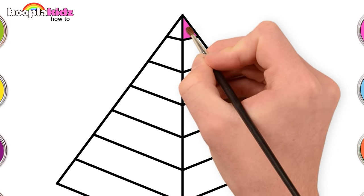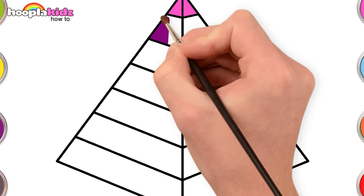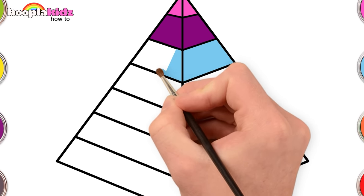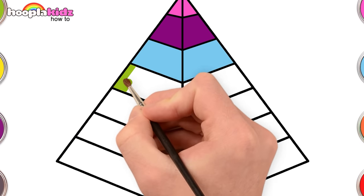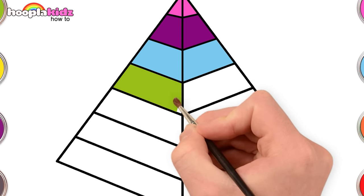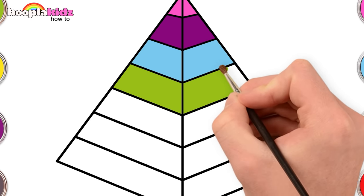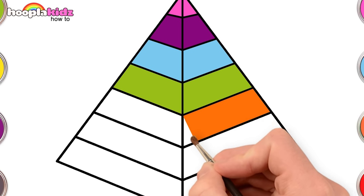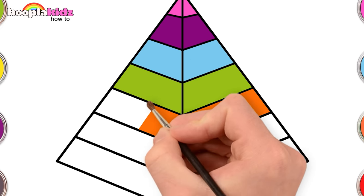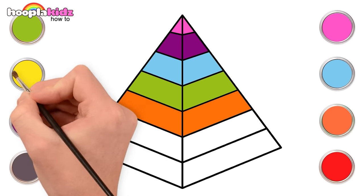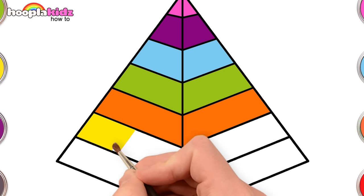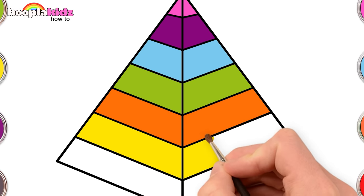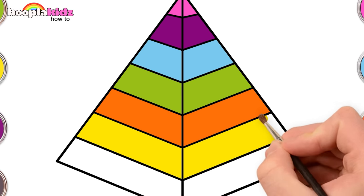Let's use pink. Next, a lovely magenta. Time for some cyan. A pretty green. Bright orange. Some yellow too. Our pyramid looks so cool. And last, red.